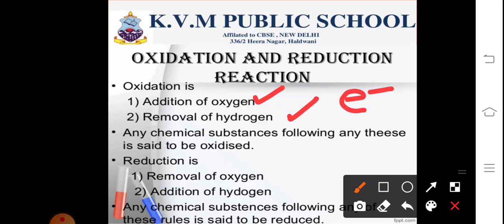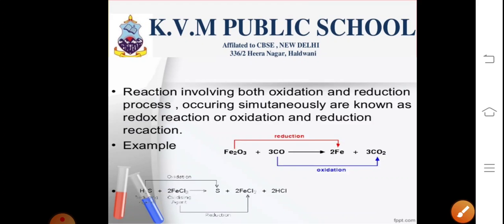The oxidizing agent is reduced by the reducing agent. When we talk about reduction, it is exactly the opposite of oxidation, which involves addition of hydrogen, removal of oxygen, and gain of electrons. The oxidizing agent is reduced by the reducing agent, whereas the reducing agent is oxidized by the oxidizing agent.